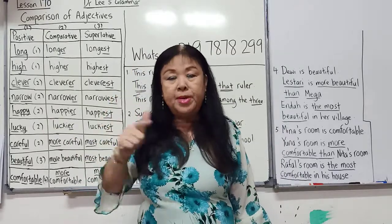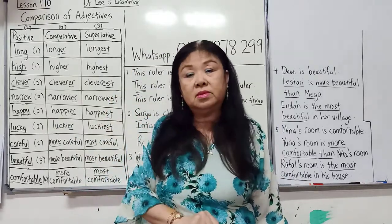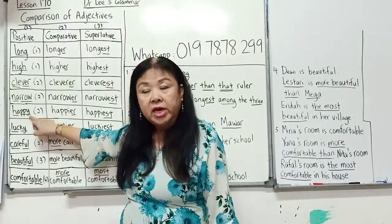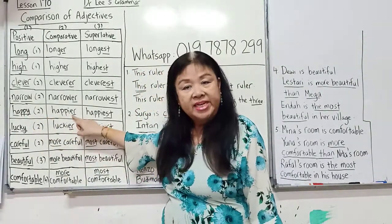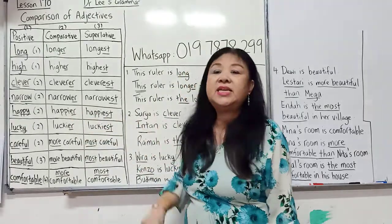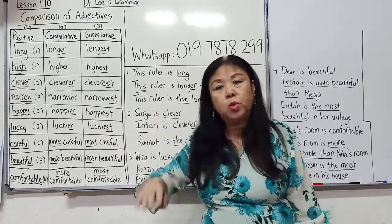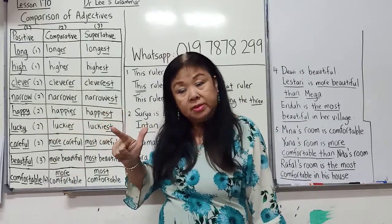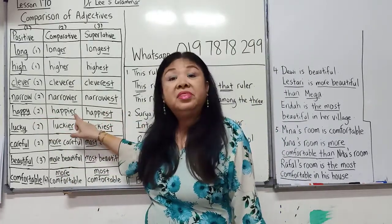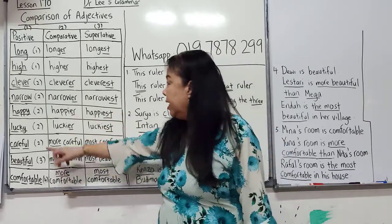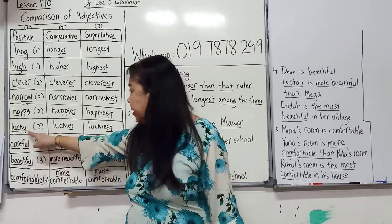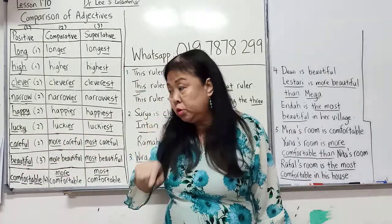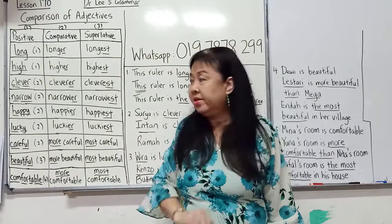Happy has two syllables. Usually when the last letter is Y, you change to IER and IEST — you drop the Y. So happy becomes happier than, and the happiest. Lucky — again you see the Y, so it becomes luckier than when comparing two, and the luckiest when comparing three or more.